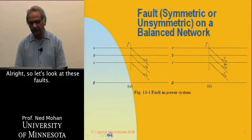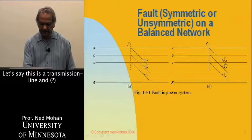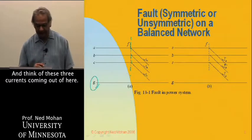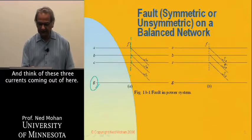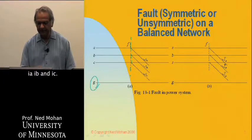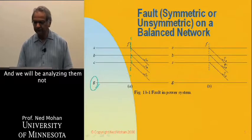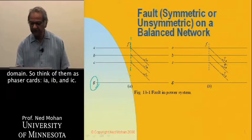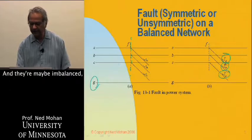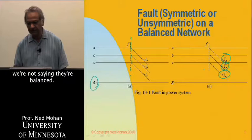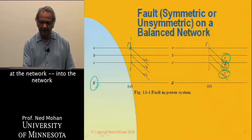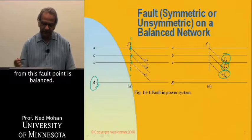So let's look at these faults. Let's say this is a transmission line, a three-phase transmission line and ground over here. This is some point F where the fault occurs. Think of these three currents coming out of here, Ia, Ib, and Ic. We will be analyzing them not in time domain but in phasor domain. Think of them as phasor currents Ia, Ib, and Ic. They may be unbalanced. Our assumption here is the network, looking into the network from this fault point, is balanced.